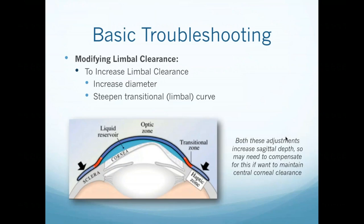To modify limbal clearance, you can increase the diameter if the lens is too small for the patient's corneal size — that's often why limbal touch occurs. Alternatively, if the limbal curve is too flat, you can steepen that curve to improve clearance. Both changes also increase sagittal depth, so if you were happy with central clearance, you may need to compensate by reducing the overall sag.